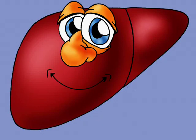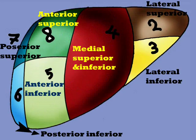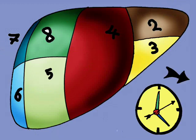Hello, meet Mr. Liver. Mr. Liver consists of eight segments: two lateral segments in the left lobe, one superior and one inferior. Segment four consists of two sub-segments: medial superior and medial inferior. Two anterior segments, one superior and one inferior. Two posterior segments, one superior and one inferior. The segments are arranged in a clockwise manner.